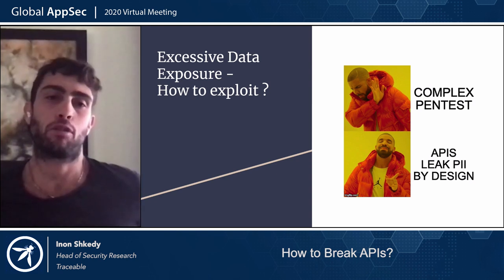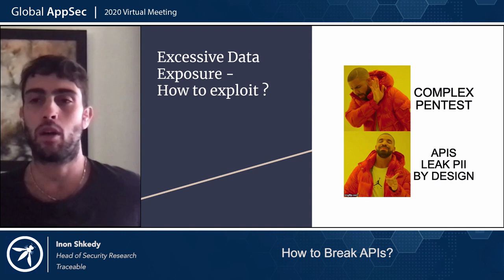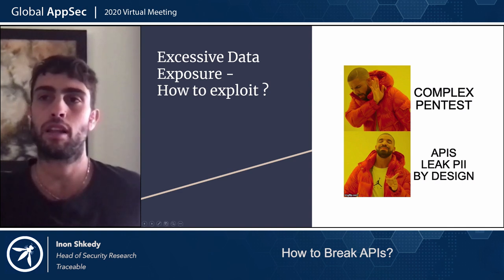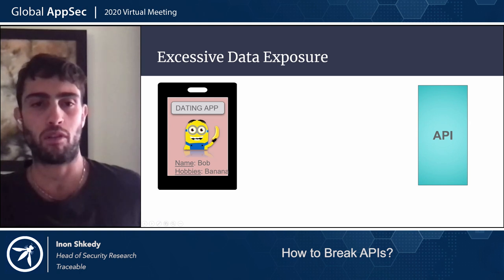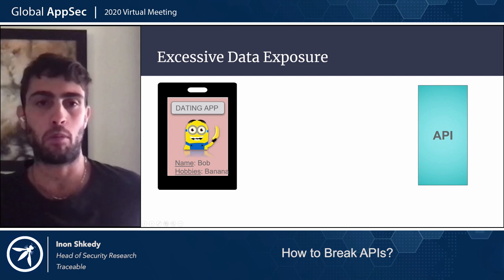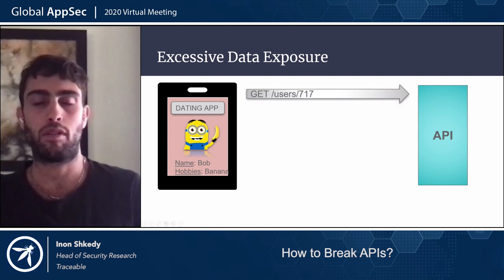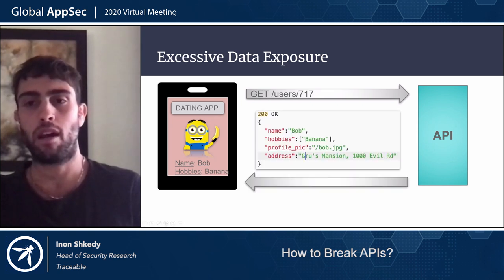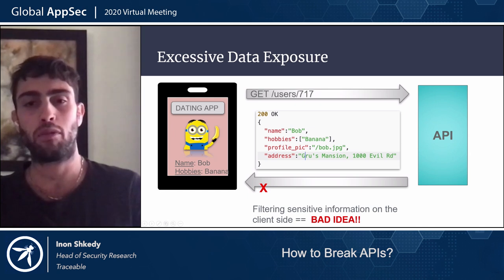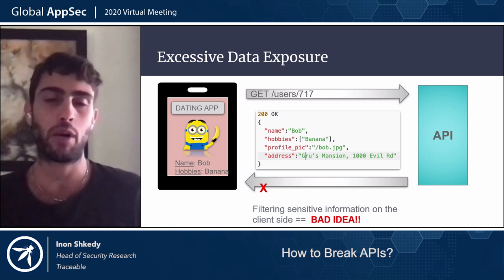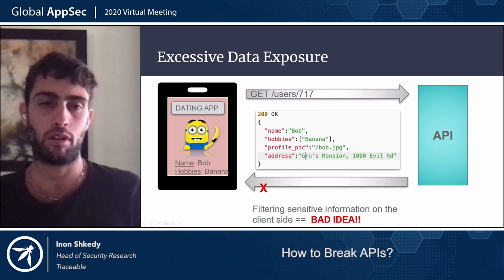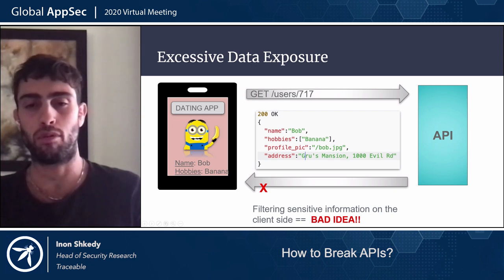Let's talk about excessive data exposure and how to exploit it — one of my favorite vulnerabilities. Instead of performing a complex attack, APIs just leak PII by design. For example, you use an app and see a user profile showing only public data like name and hobbies. But behind the scenes, the API call to GET /user/717 returns all the public data plus the user's address, which is PII. Developers on the backend rely on frontend developers to filter out sensitive data — a very bad idea. Even if you can't see it in the UI because it's filtered before display, if you sniff the API traffic you can easily expose this information.